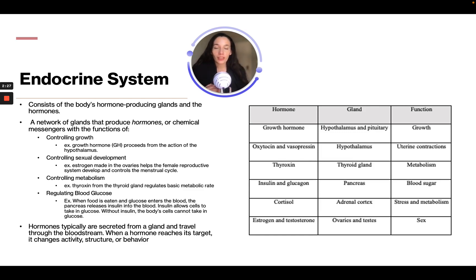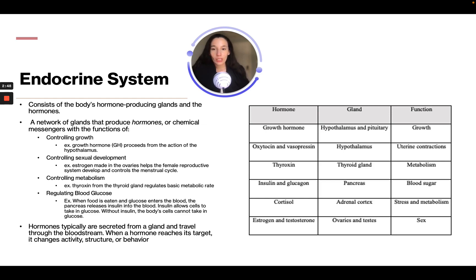The endocrine system consists of the body's hormone-producing glands and the hormones — a network of glands that produces hormones or chemical messengers with the function of controlling growth. For example, growth hormone proceeds from the action of the hypothalamus. Hormones can also control sexual development; for example, estrogen made in the ovaries helps the female reproductive system develop and controls the menstrual cycle.